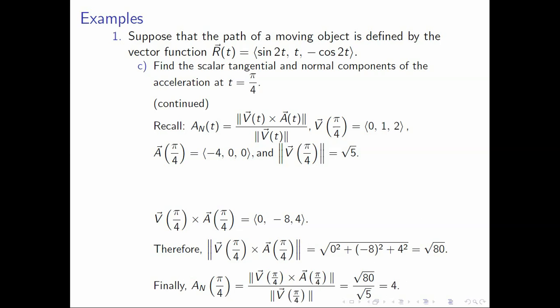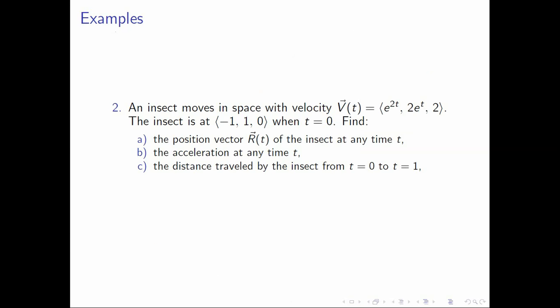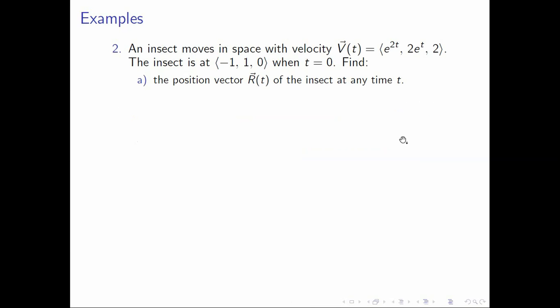For number 2, an insect moves in space with velocity v of t equals (e^(2t), 2e^t, 2). The insect is at the vector (−1, 1, 0) when t equals 0. We need to find: the position vector r of t at any time t, the acceleration at any time t, the distance traveled from t = 0 to t = 1, and the scalar tangential and normal components of the acceleration when t = 0. For letter A, since v of t is the derivative of r of t, we integrate v of t component-wise.